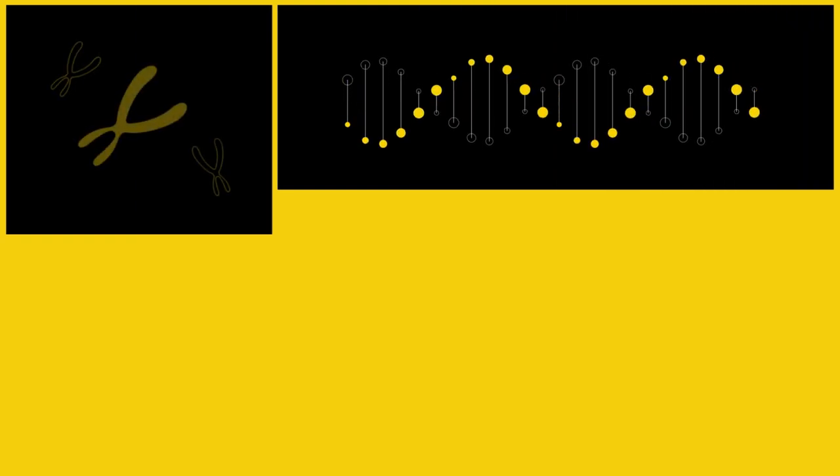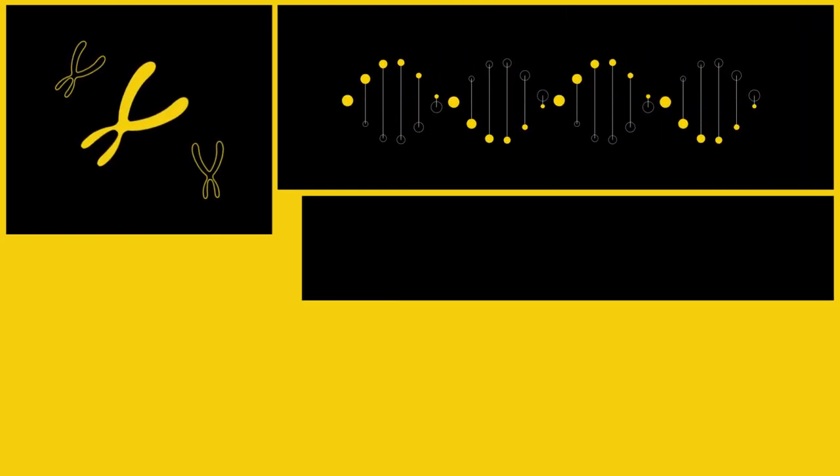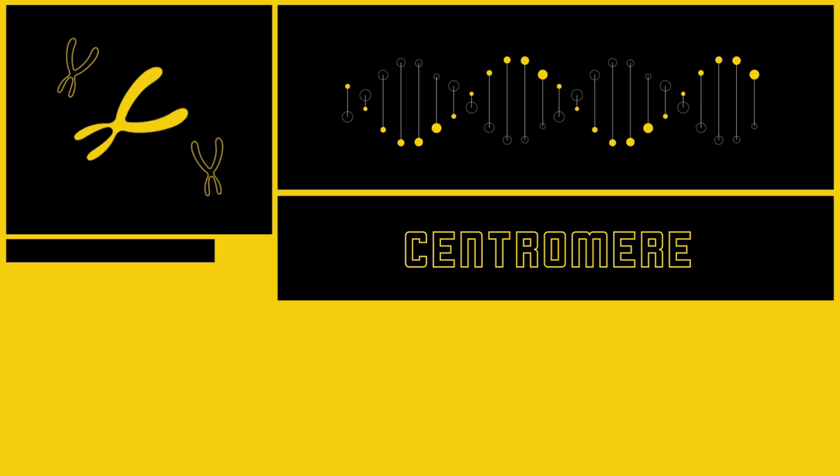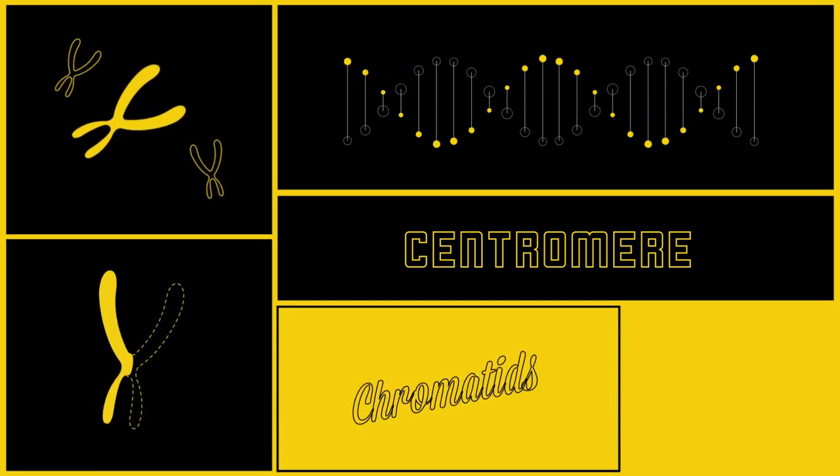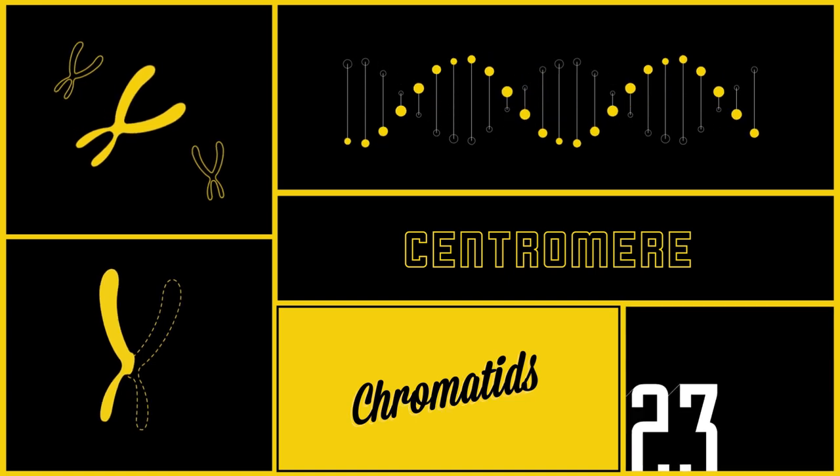From this video, you should know that chromosomes hold the DNA inside the nucleus. They have a centromere, which holds the duplicated chromosomes together, and these duplicates are known as chromatids. Humans have 23 pairs of chromosomes, but other species have different amounts.